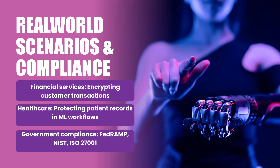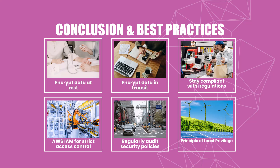As we conclude, let's distill what we've covered into actionable best practices for securing your ML operations on AWS. First, embrace encryption as a default stance: always encrypt your data at rest and in transit, leverage KMS for centralized key management, and implement automated compliance checks to verify encryption status. Second, apply least privilege access through IAM — build roles specific to ML functions such as training, deployment, and monitoring — and regularly review permissions to eliminate unnecessary access. Remember that effective security is as much about what you prevent as what you allow.